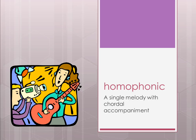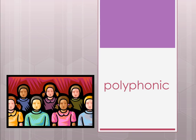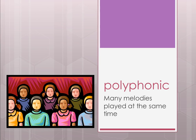Polyphonic — represented by lots of little voices — means many melodies played at the same time. They are very different melodies played simultaneously. There's a distinction here: any individual part in a polyphonic composition could be performed on its own and sound decent, whereas a bass line alone doesn't quite work the same way.